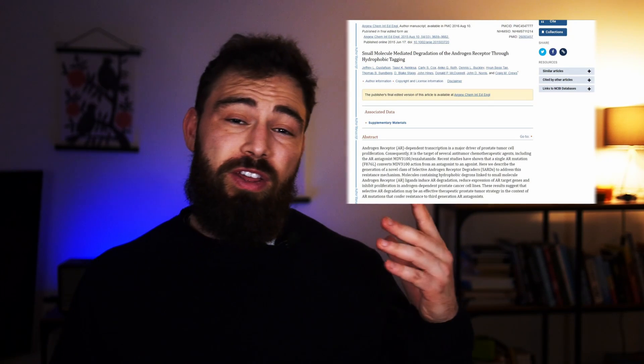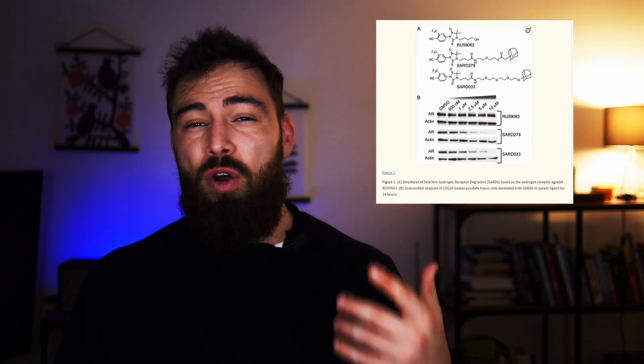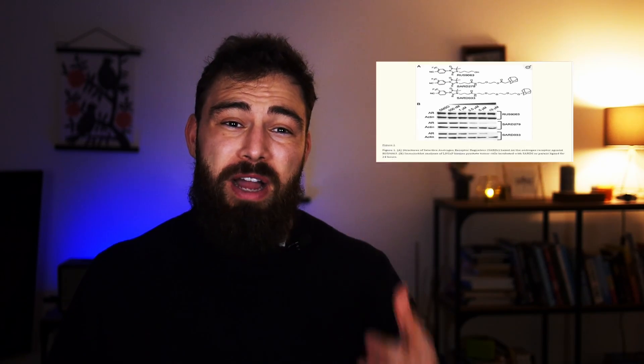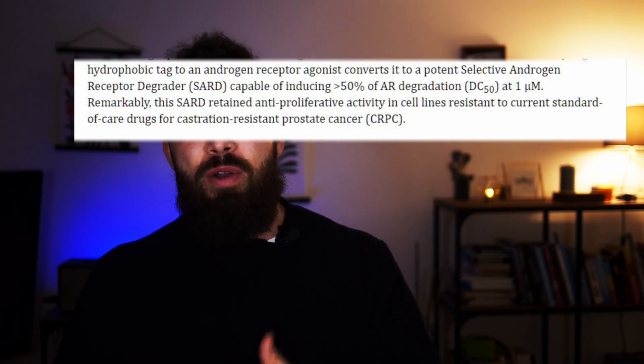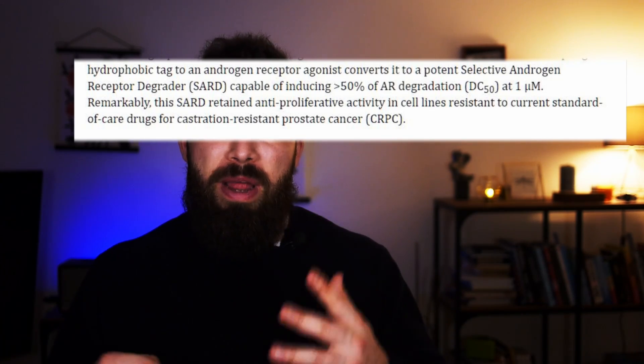Now we have the basics in order, so it's a good time to look at how other androgen receptor degraders have done in past studies. The first is a fairly interesting study since they compare their receptor degrader to an older candidate for androgen antagonism, namely IU59063. What is remarkable about this study is not only did it outperform IU, but it actually achieved a DC50 — meaning 50% receptor downgrading — at only one micromole.